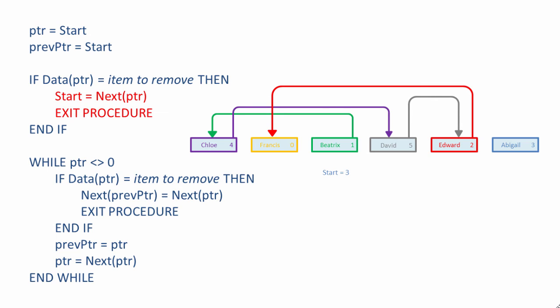And we can exit the procedure. If we want to remove one of the other items, we have a loop which will traverse the list to identify which one to remove. As we visit each item, we check if it's the item to remove. If it isn't, we keep a record of the current item before we move on to visit the next — we do this by assigning PTR to Previous PTR. When we do eventually visit the item that we want to remove, we can bypass it by getting the preceding item to point to whatever it was pointing to.